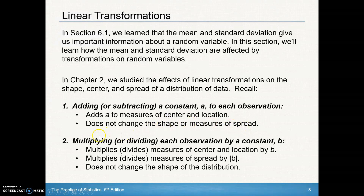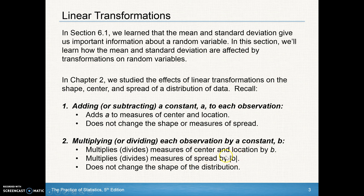But if we multiply each observation by a constant — say, multiply everything by 10 — that will multiply the measure of center or location by that same amount, by 10 in this case. It will also multiply the measure of spread by that constant in absolute value, because spread is not measured in negative values; it's always positive. But it does not change the shape of the distribution.